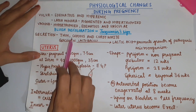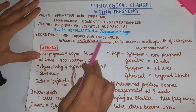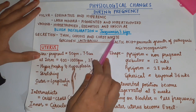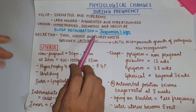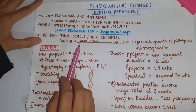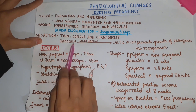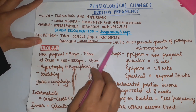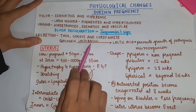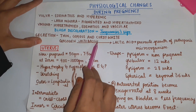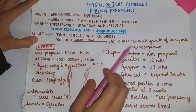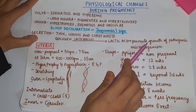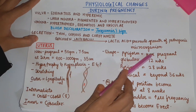In secretions, thin copious and curd-like secretion is present. The glycogen is converted into lactic acid in the presence of Lactobacillus, which prevents the growth of pathogenic microorganisms.